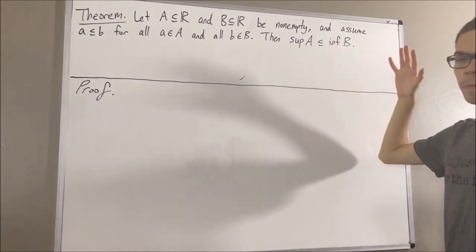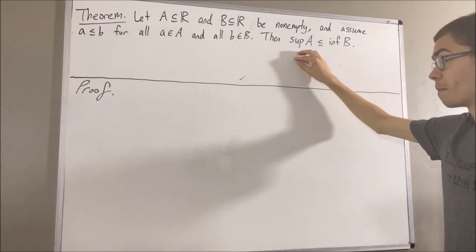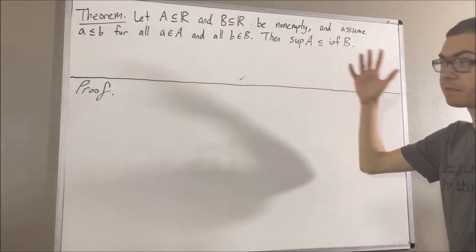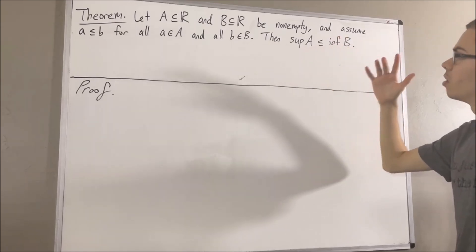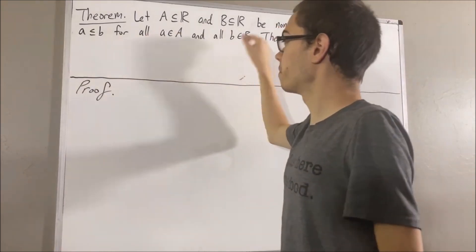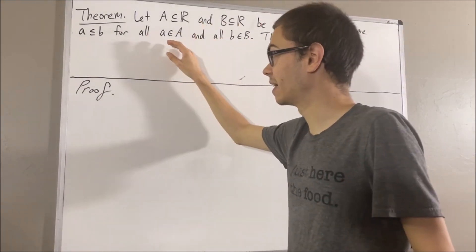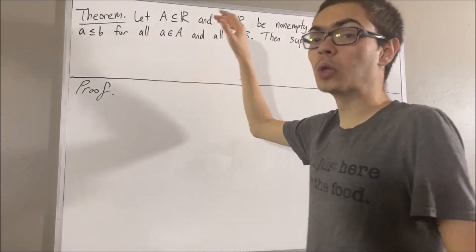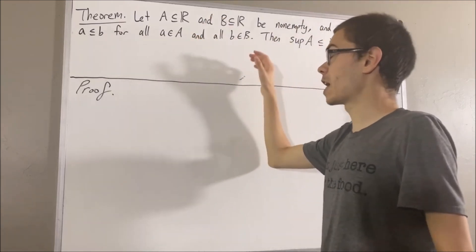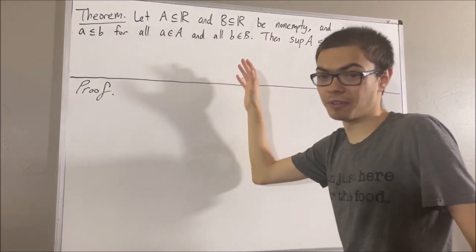Now, first of all, how do we know that the supremum of A and the infimum of B actually exist? Well, this assumption tells us that every element of A is a lower bound of B, and every element of B is an upper bound of A.